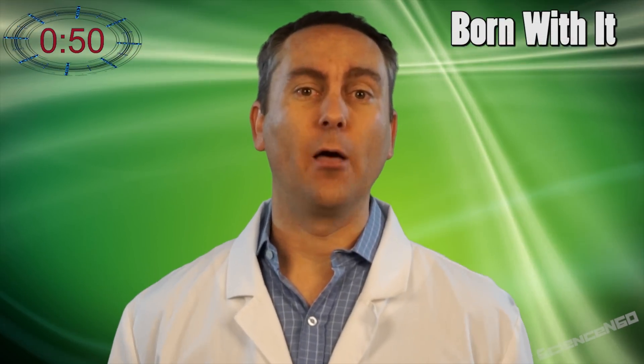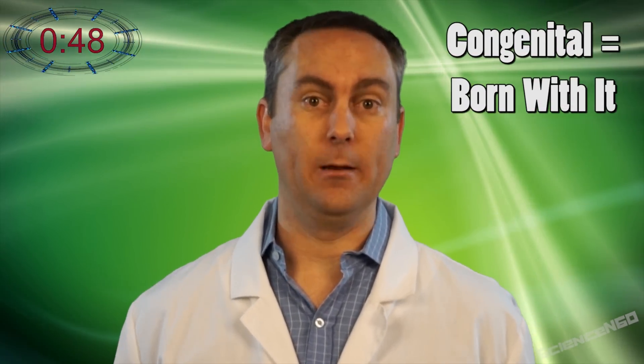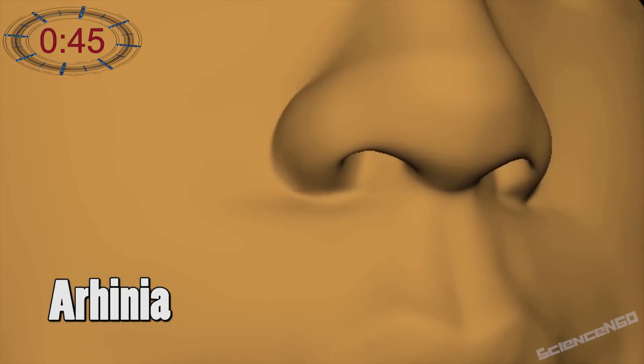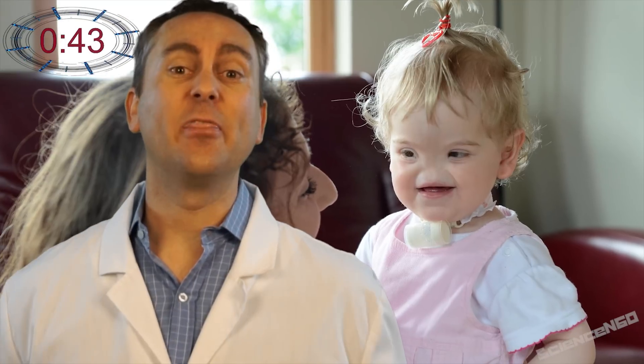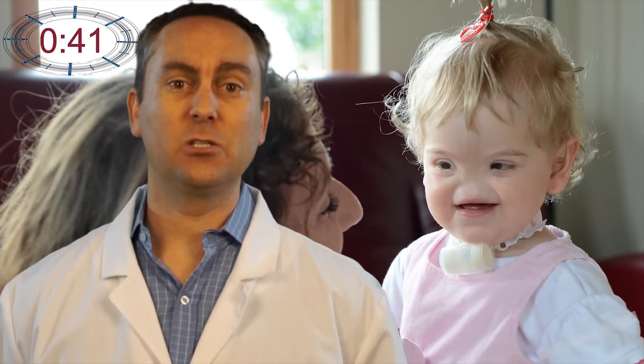If you hear the word congenital before a health condition, it means the person was born with it. Arrhinia is the partial or complete absence of a nose and it's extremely rare. There's only been 37 cases of babies born like this worldwide.